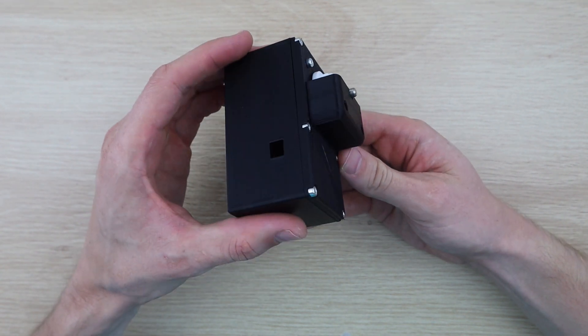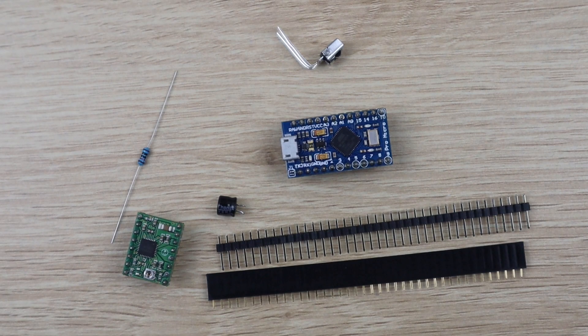In addition to your Arduino and stepper motor driver, you'll also need an infrared receiver, a 10k resistor and a 100 microfarad capacitor. I'll put links to these components in the video description.